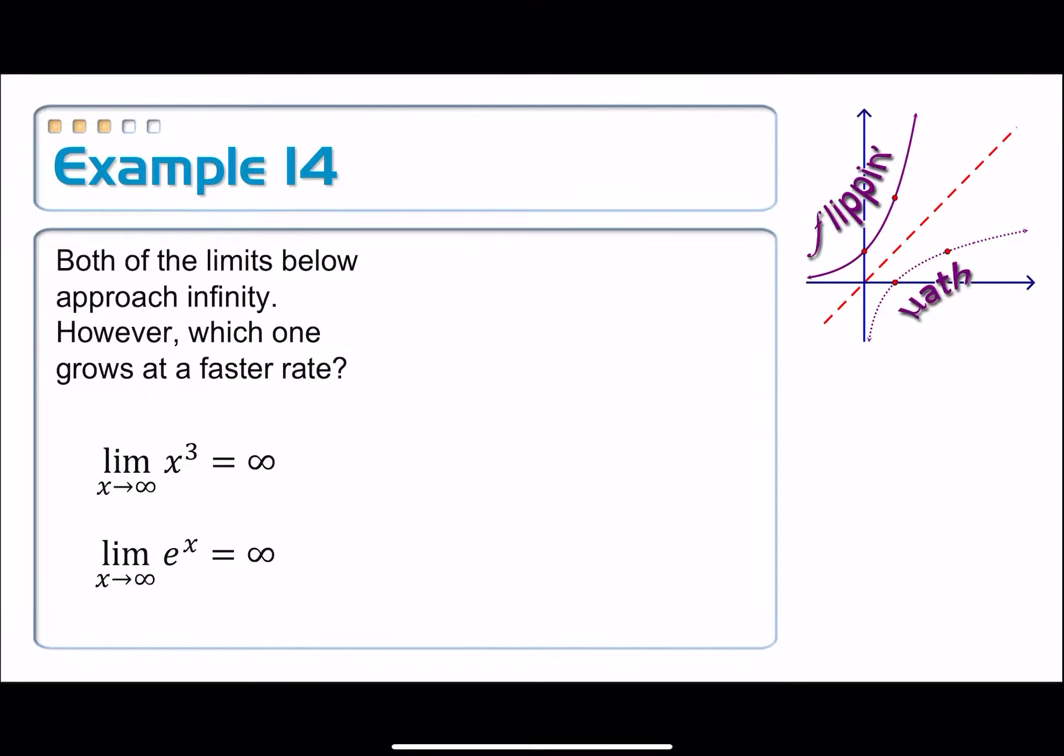One way to think about this is just to look at the graphs. We have graphed here y equals x cubed in pink, and then we have e to the x in blue. Initially the pink one is winning, but it doesn't take long for e to the x, the blue graph, to overtake it and then simply outpace x to the third.